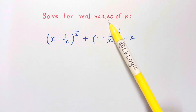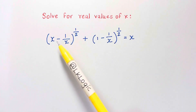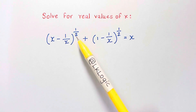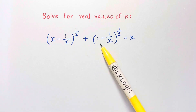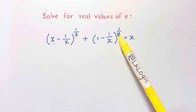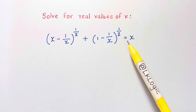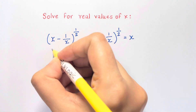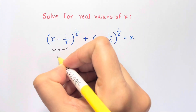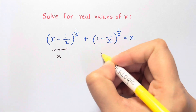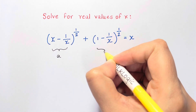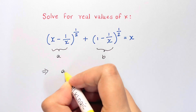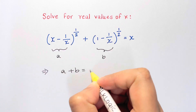Hi guys. Solve for the real values of x: (x minus 1 over x) to the power of half plus (1 minus 1 over x) to the power of half equals x. Let's say this term is equal to a and this term equals b. Now we have a plus b equals x.